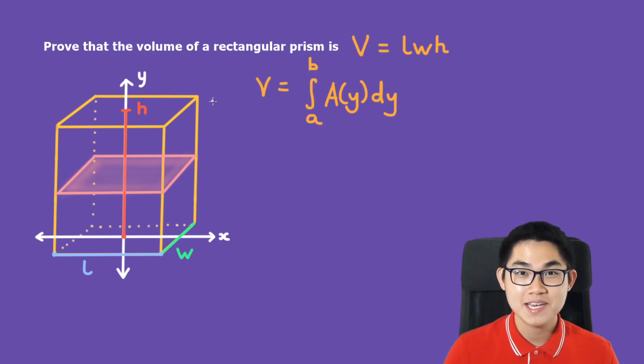The first step is to calculate A and B. So A is basically our starting point. We start at the bottom, and B is the top. So B will be H and A will be 0.